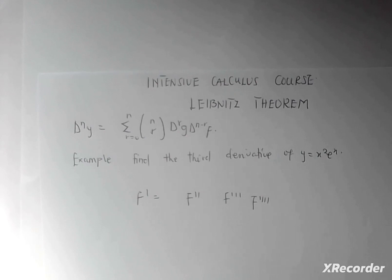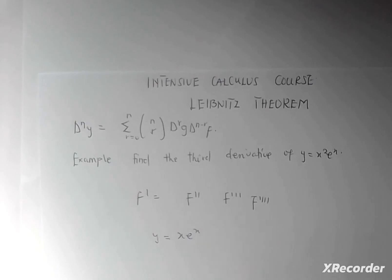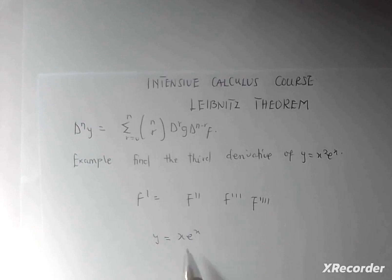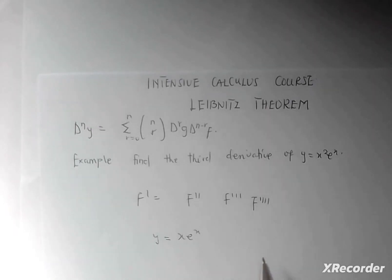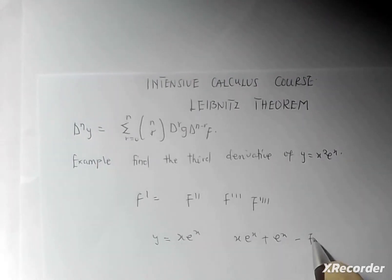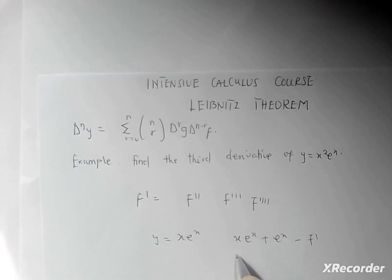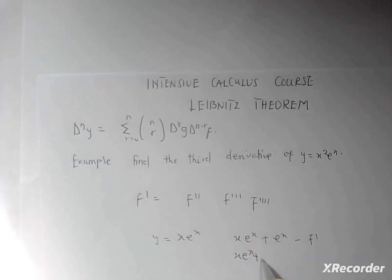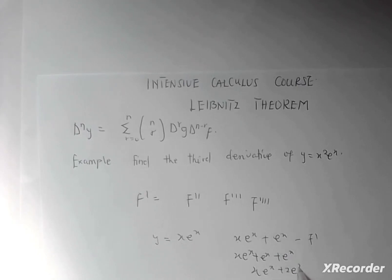But what if the function is a product of two different functions? So if I give you y equal to x·e^x, and I ask you to differentiate it three times, you're going to apply the product rule. For the product rule, you maintain the first and differentiate the second, plus differentiate the first and maintain the second. The first derivative gives us x·e^x + e^x. Applying the product rule again for the second derivative gives us x·e^x + 2e^x.